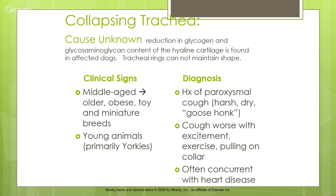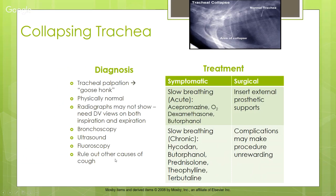The cough is worse with excitement, exercise, and pulling on a collar — so use a harness. We often see this concurrent with heart disease. On tracheal palpation you'll get that goose honk, but remember kennel cough does too. Do an x-ray on both inspiration and expiration — inspiration is typically when we see the collapse, and expiration x-rays (which we often take by default) may miss it.